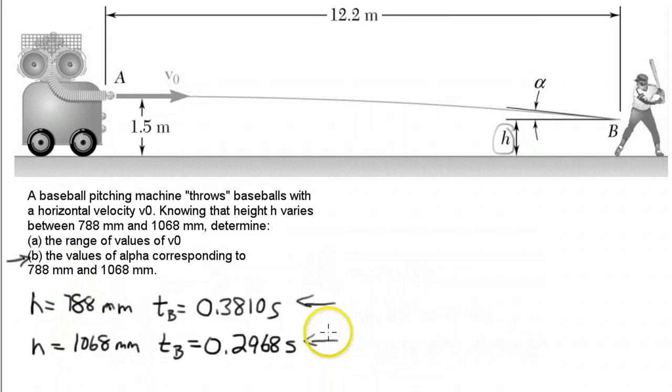What we're trying to solve in part B is to find the angle alpha at which the ball arrives. How do we do this? We've got velocity in the x direction, which we can calculate from these times, and velocity in the y direction. These are the velocities when the ball arrives at the batter. There's a resultant velocity vector which is the vector sum of the x and y velocities.